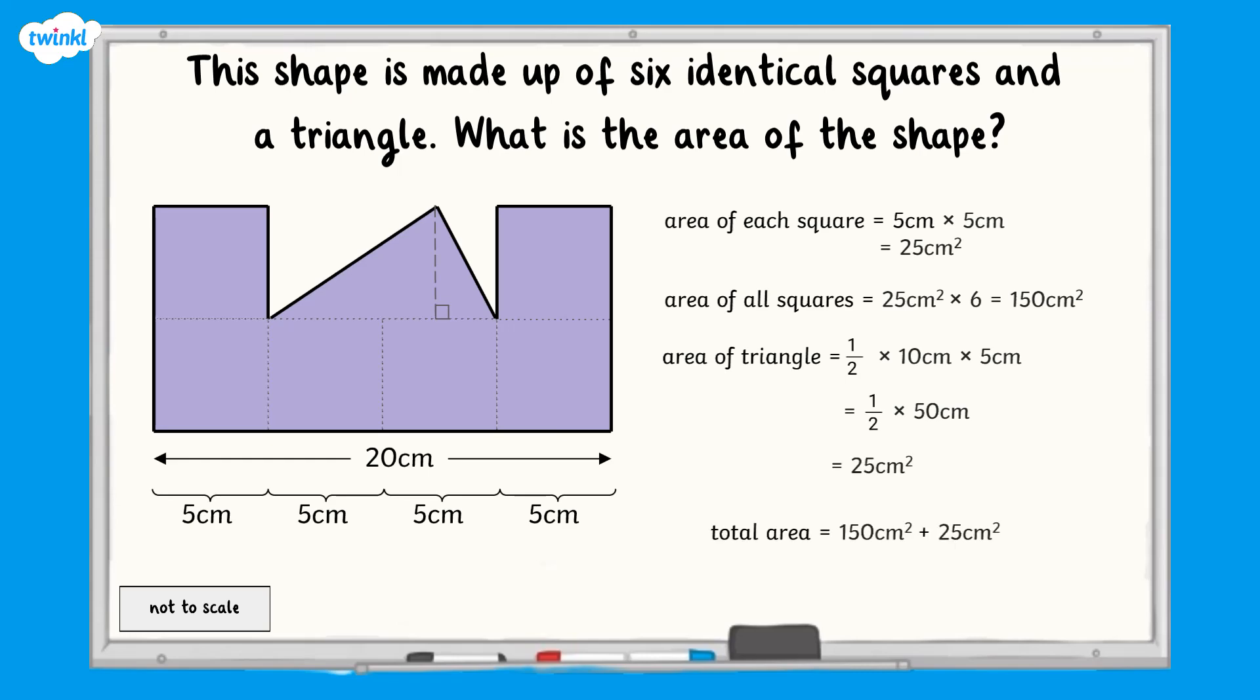So if you add the 150 to the 25, you will find the total area of the shape, which is 175 cm squared. Well done if you got that one correct.